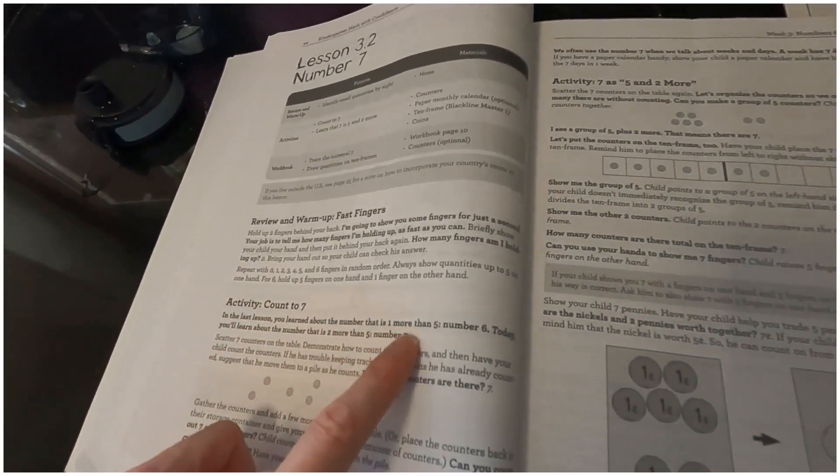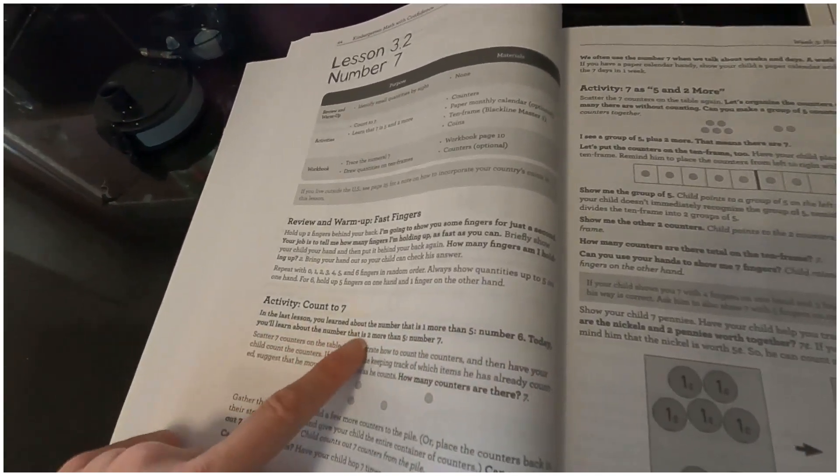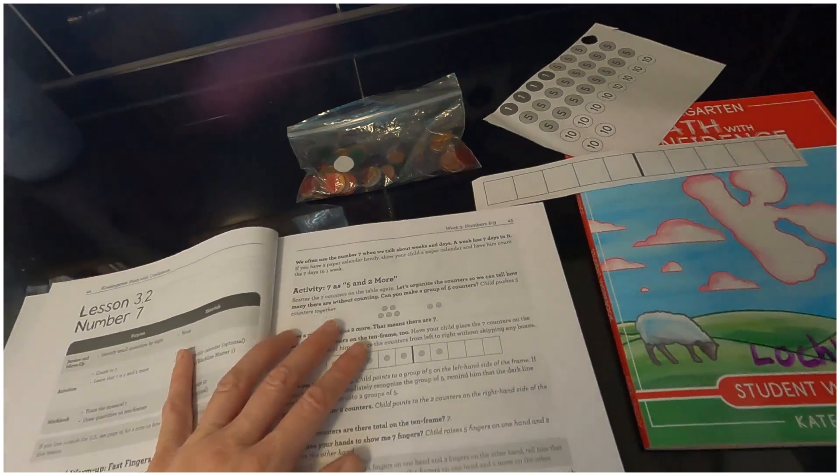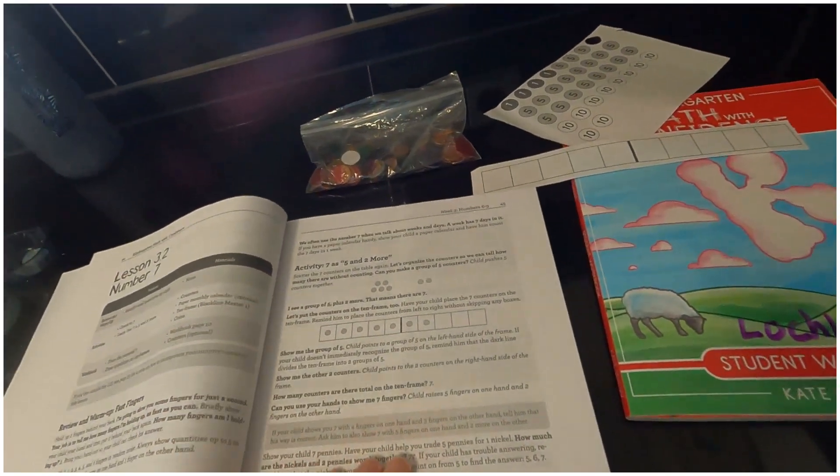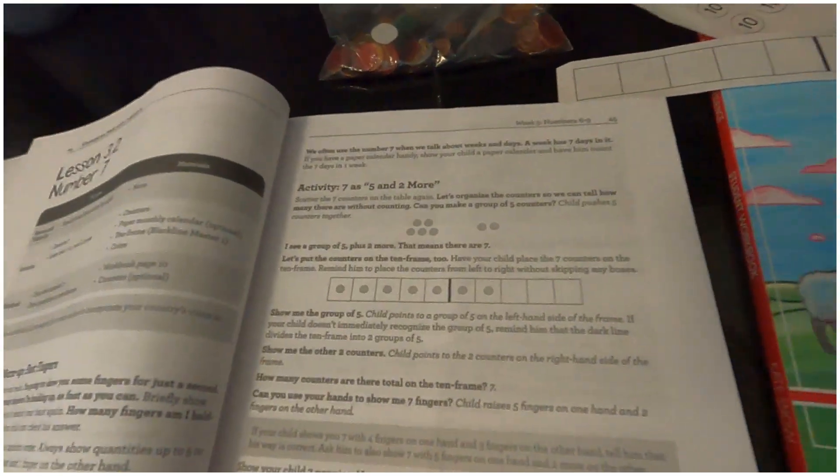And now we're going to do count to seven. So the bolded is what you say: 'In the last lesson you learned the number that is one more than five and that number is six. So today we're going to learn about the number that is two more than five, that is number seven.'